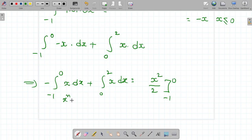Understand? x to the power n dx equals x to the power n plus 1 by n plus 1. Here applying this: x squared by 2, minus 1 to 0 are limits. Integral 0 to 2 x dx, also x squared by 2. Limits are 0 and 2.